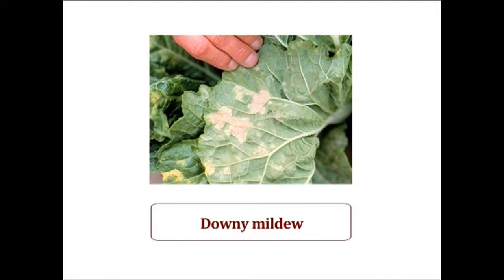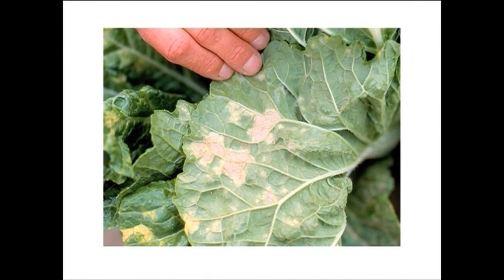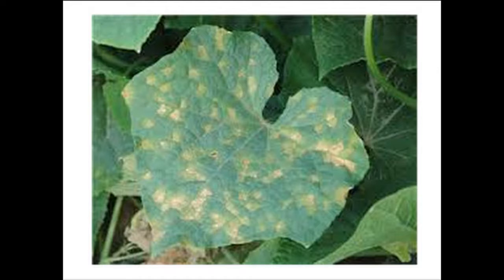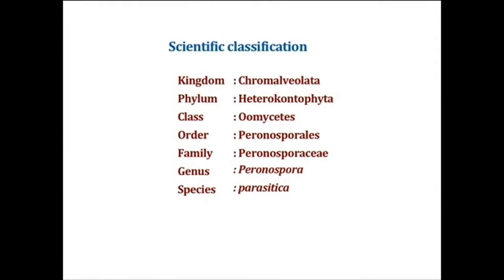The next disease is downy mildew. The pathogen shows small brown spots on the lower surfaces of the leaves and light yellow spots on the upper surface. Scientific classification: Kingdom Chromalveolata, Phylum Heterokontophyta, Class Oomycetes, Order Peronosporales, Family Peronosporaceae, Genus Peronospora, Species parasitica.